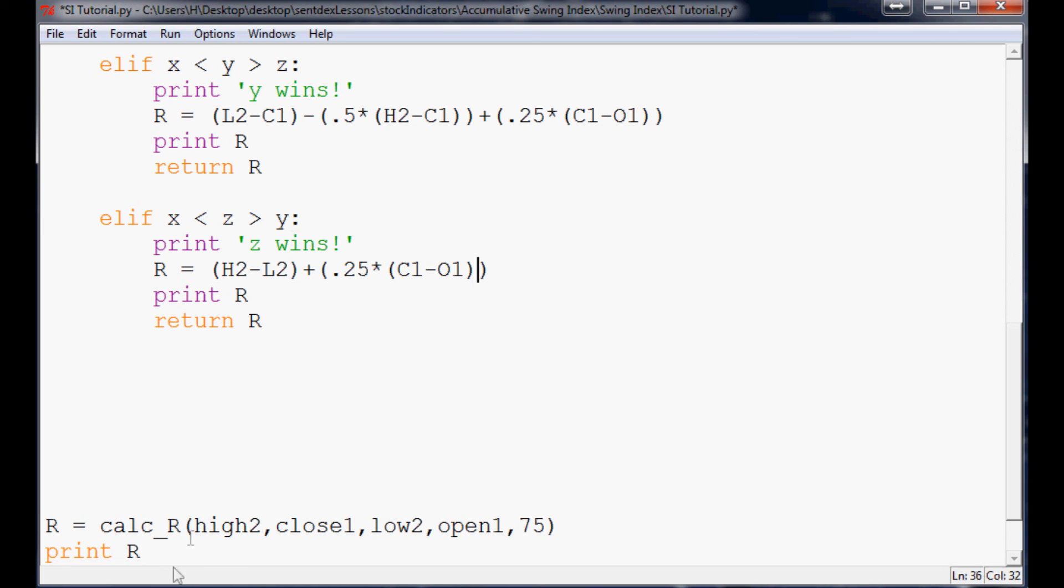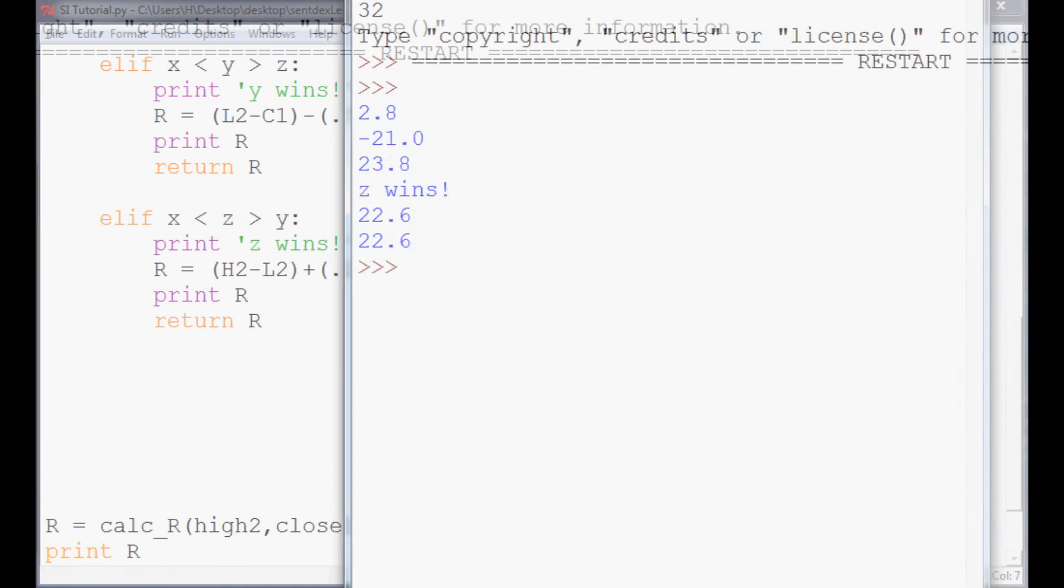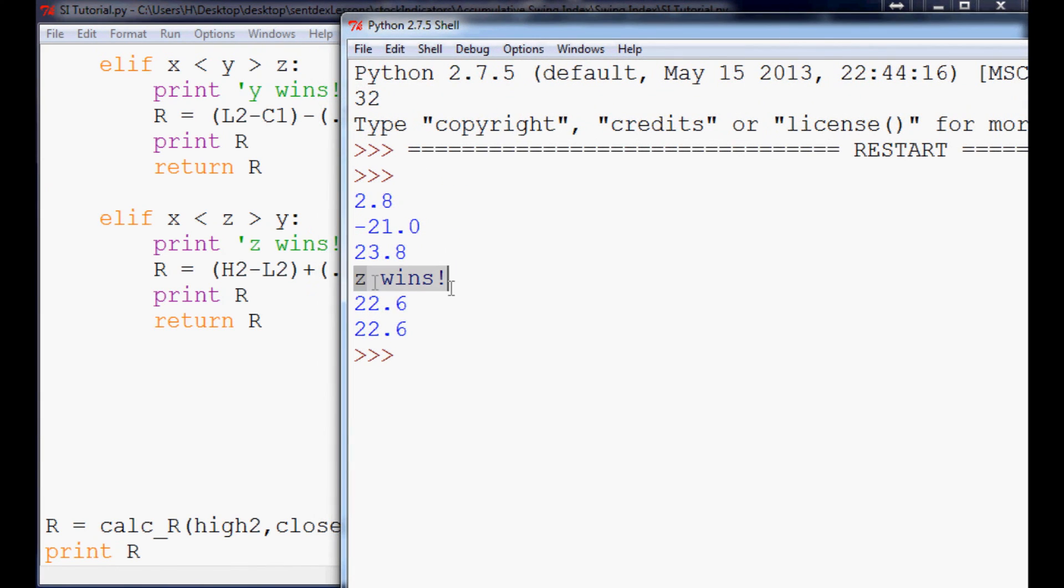So, now when we run this, we should get the output of R. So we'll save it, run it, make sure we didn't get any errors. And we can see here that Z won. So this was X, this was Y, this was Z. And sure enough, 23.8 is the highest value. So Z did indeed win. And now we have the R value of 22.6. That is the value of R.